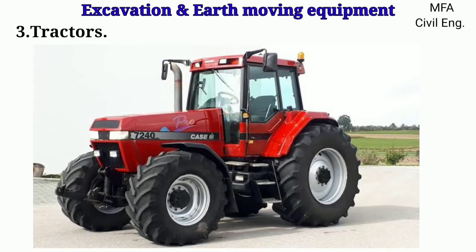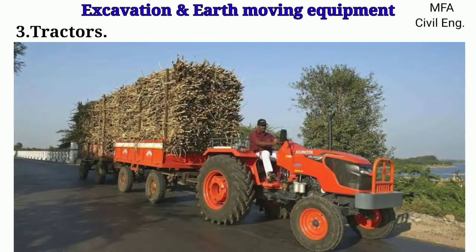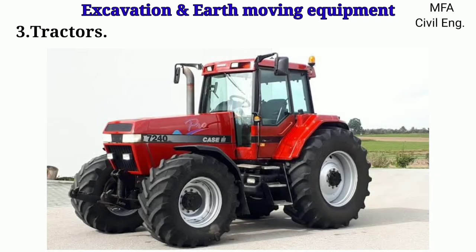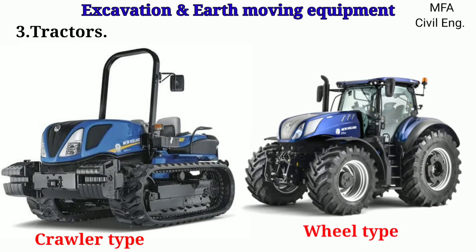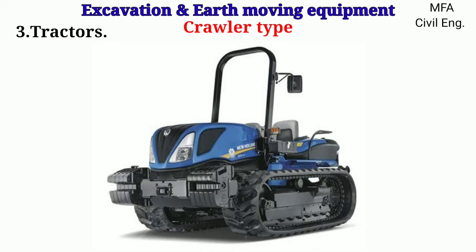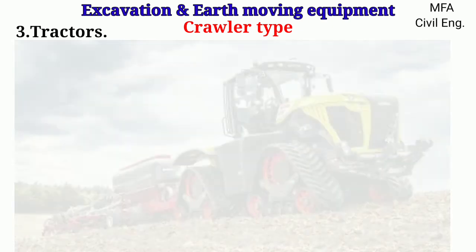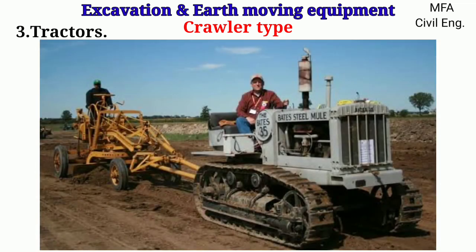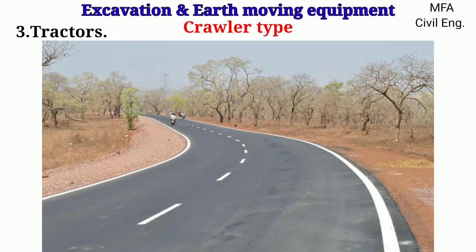Tractors are multipurpose machines used mainly for pulling and pushing other equipment or heavy loads. They are also used for agricultural purposes. Tractors may be classified as crawler type and wheel type. The crawler type tractor is versatile equipment used to move bulldozers, scrapers, and wagons on rough roads. It has a chain drive which makes it effective even in loose or muddy soil. The speed of this type does not normally exceed 12 km per hour, and it is not used on bituminous roads.